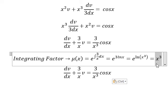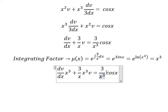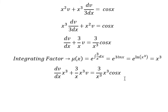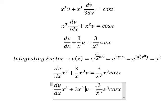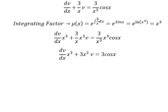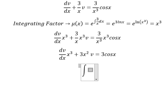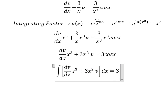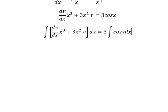That means we multiply both sides by x to the power of 3. We simplify. Next, we put the integration for both sides.